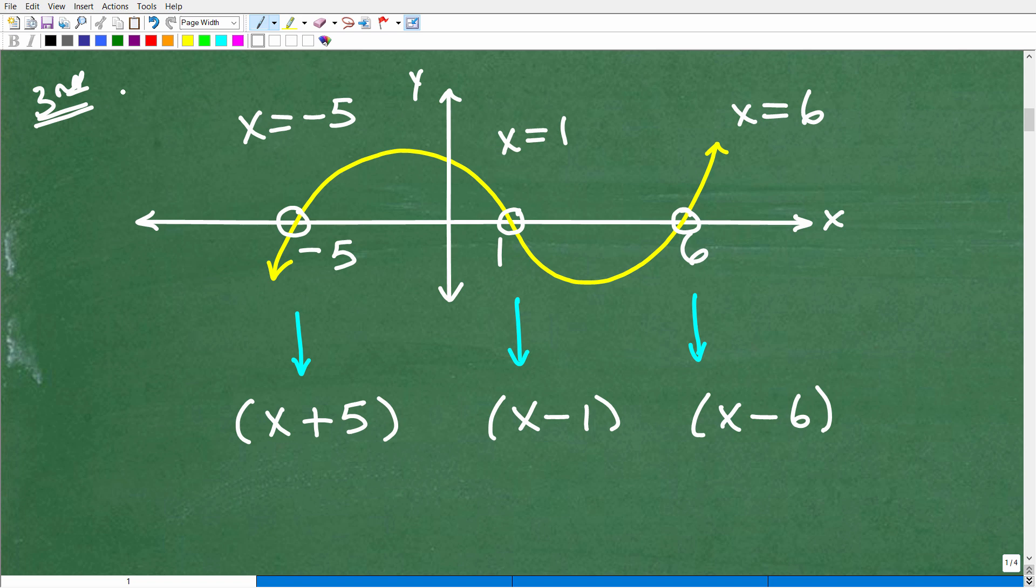Now, if you think about this, if x equals negative 5, I can write this as we call a linear factor. So x equals negative 5, I can write that as x plus 5. 1, I can think of as the linear factor x minus 1. And then 6, I can write this as a linear factor, x minus 6. Now, why is that the case?